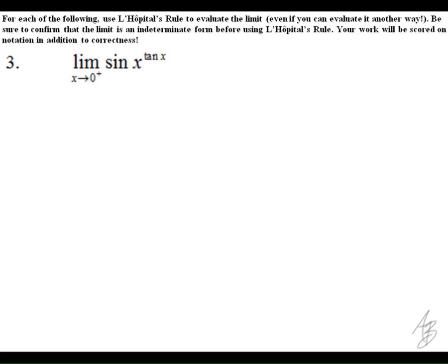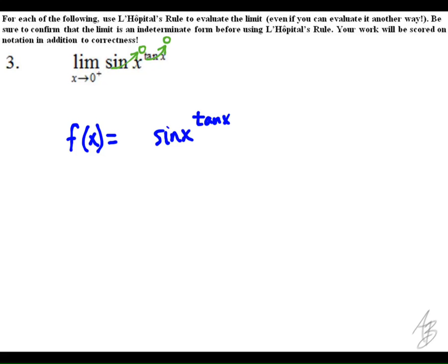On the third problem, we get the indeterminate form zero to the zero power. We have conflicting rules here — zero to any power is zero, but anything to the zero power is one — so we could get zero, we could get one, or we could get something else as our answer.